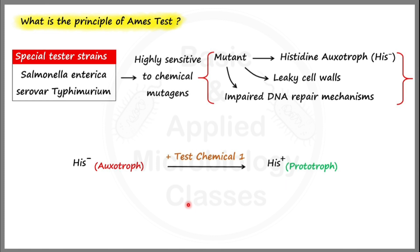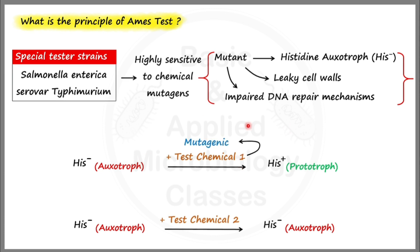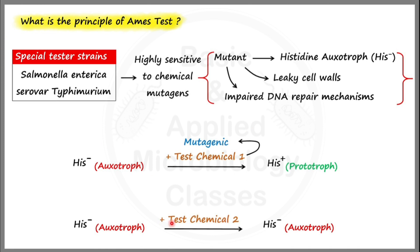In the second case, we take the same histidine auxotrophic strain of Salmonella and treat it with test chemical 2. What we observe is that the histidine auxotroph still remains a histidine auxotroph after treatment. So we can conclude that test chemical 1 was a mutagenic agent that converted the auxotroph to a prototroph — it induced a back mutation. Test chemical 2, however, caused no conversion, so it is a non-mutagenic chemical.